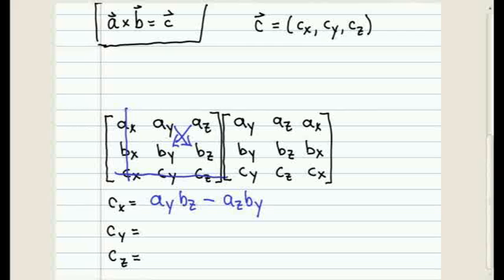It's basically been rotated around to the other side of the matrix. Now again, all you have to do is cross off the column and the row that correspond to the unknown element you want to find, CY.